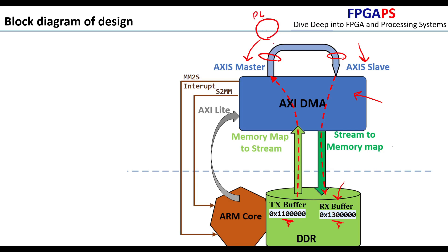For example, we can have peripherals in the PL and the AXI Stream Master will transfer data to those peripherals. Or we can have peripherals in the PL and receive data from them. But for this example, we are going to use a simple loopback mode.